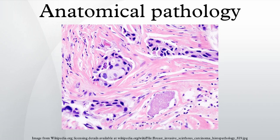Similar specialties exist in veterinary pathology. Anatomic pathology relates to the processing, examination, and diagnosis of surgical specimens by a physician trained in pathological diagnosis. Clinical pathology processes tests more familiar to the general public, such as blood cell counts, coagulation studies, urinalysis, blood glucose level determinations, and throat cultures.